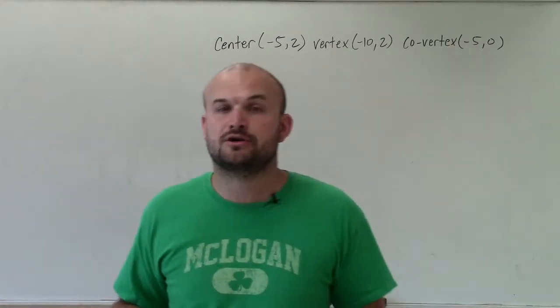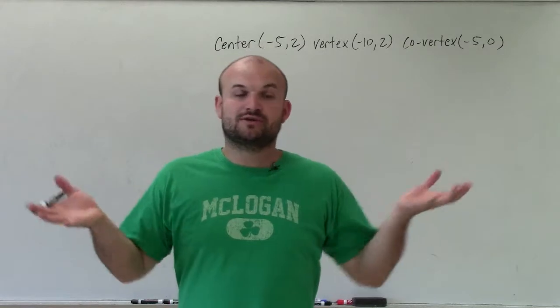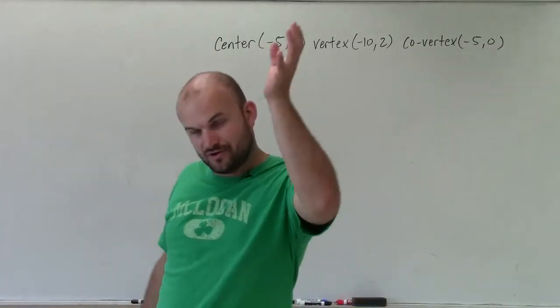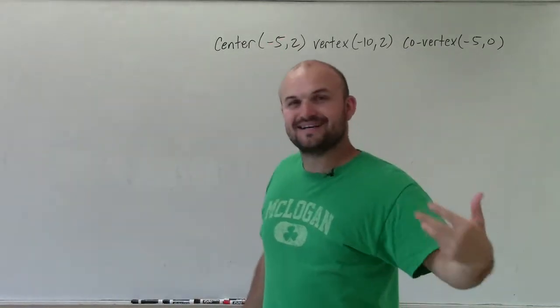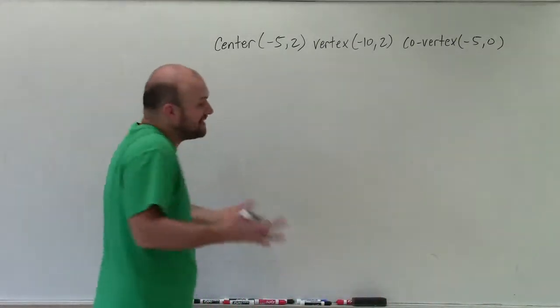And when writing the equation of the ellipse, we've got to be able to determine what type of equation we're writing. Do we write an equation when the major axis is horizontal or the major axis is vertical? So to do that, it seems like I say the same thing for every video: we've got to write down what we know and graph what we know.